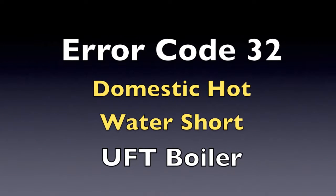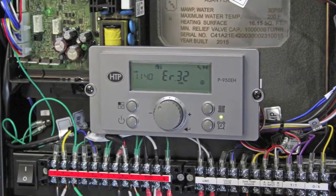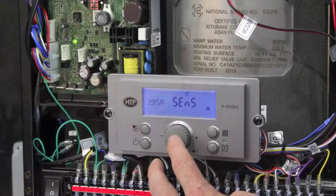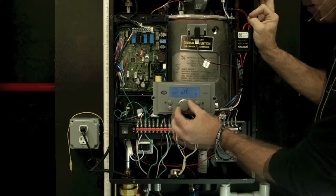Error 32 domestic hot water short, UFT models only. This error can appear if an Aquastat is installed and function 39 in the installer menu is set to sensor, or the sensor has become shorted.